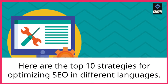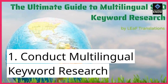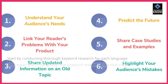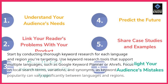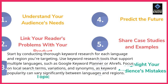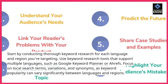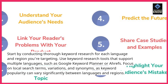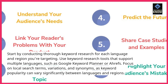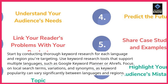Here are the top 10 strategies for optimizing SEO in different languages. 1. Conduct multilingual keyword research. Start by conducting thorough keyword research for each language and region you're targeting. Use keyword research tools that support multiple languages, such as Google Keyword Planner or Ahrefs. Focus on local search terms, variations, and synonyms, as keyword popularity can vary significantly between languages and regions.